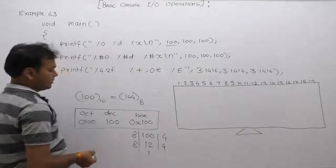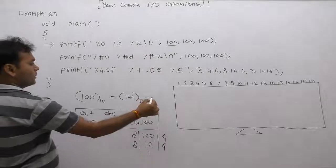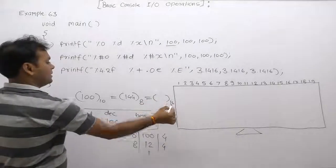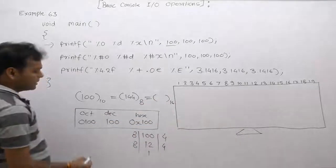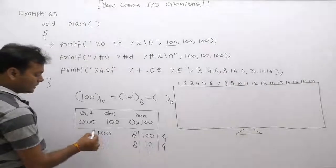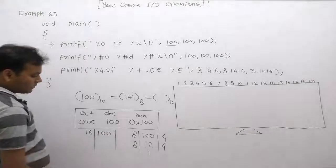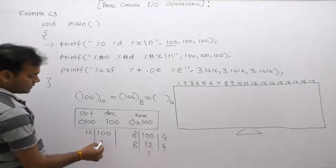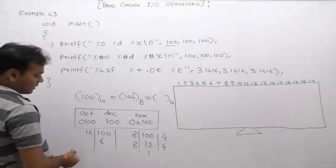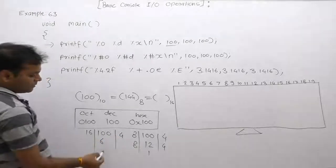Similarly, when we want to convert the same number 100 into base 16: 100 divided by 16 — 16 multiplied by 6 is 96, so the remainder is 4, giving quotient 6 and remainder 4. Therefore, the equivalent hexadecimal value of 100 is 64.